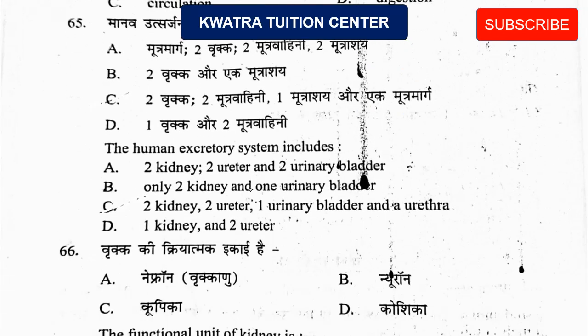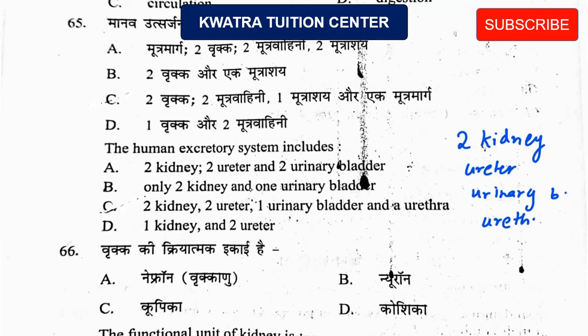Next question: the human excretion system includes — 2 kidneys, then ureter, then urinary bladder, then urethra. So the system has 2 kidneys, 2 ureters, 1 urinary bladder, and 1 urethra. Option C is correct because all parts are given.